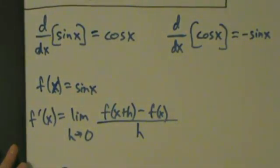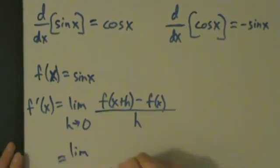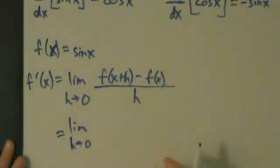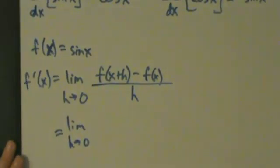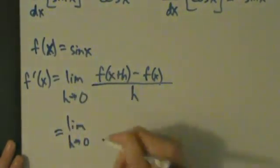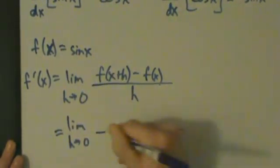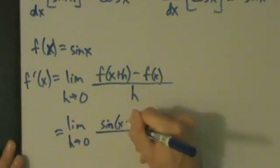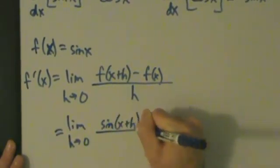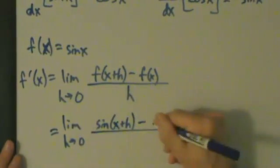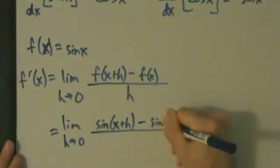So this equals the limit as h goes to 0. If f of x is sine of x, then f of x plus h is sine of x plus h. And then f of x is just sine of x. So then we have this.